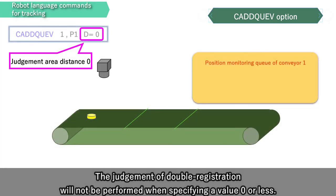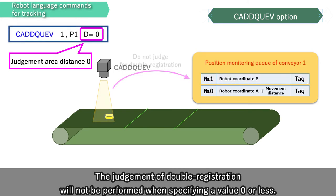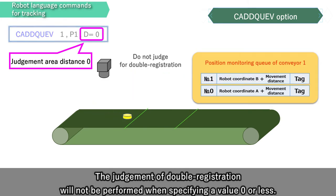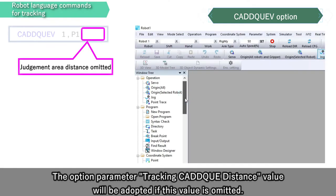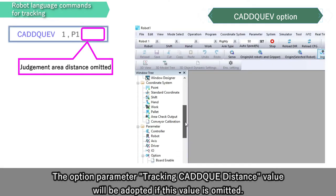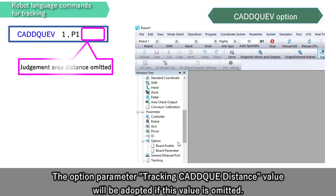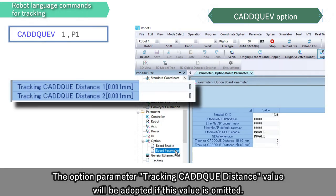The judgment of double registration will not be performed when specifying a value of 0 or less. The option parameter, tracking C at queue distance value, will be adopted if this value is omitted.